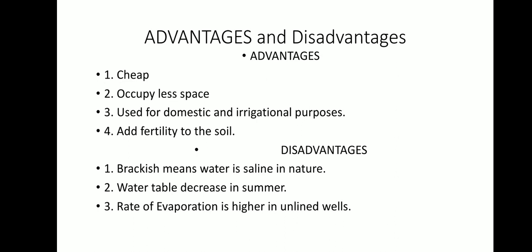Disadvantages of well irrigation: the water can be brackish — saline in nature — meaning it cannot be used for irrigation or domestic purposes. The water table decreases in summer when temperature is high and there is no rainfall. Also, the rate of evaporation is higher in unlined wells, where there are no embankments and the well is open to the surface.